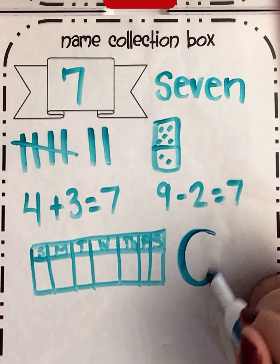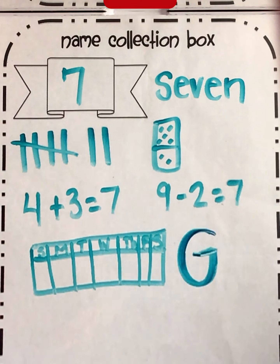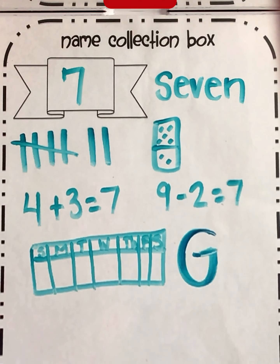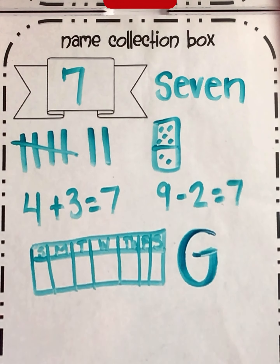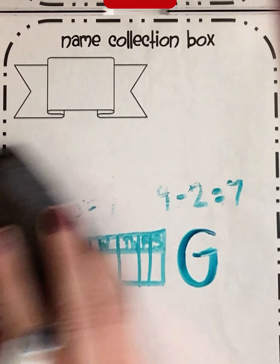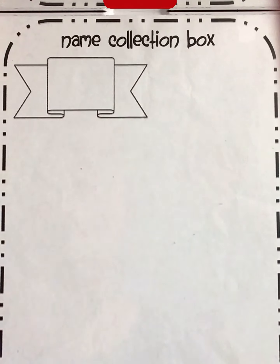I'm also going to write the letter G. Do you know why I put the letter G there? Well, it's because it's the seventh letter in the alphabet. That's a great way to show it as well. Boys and girls, I hope that you have enjoyed learning about name collection boxes. I hope you're ready to try your own. See you soon.